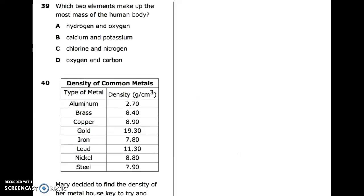39: Which two elements make up the most mass of the human body? A. Hydrogen and oxygen. B. Calcium and potassium. C. Chlorine and nitrogen. D. Oxygen and carbon.